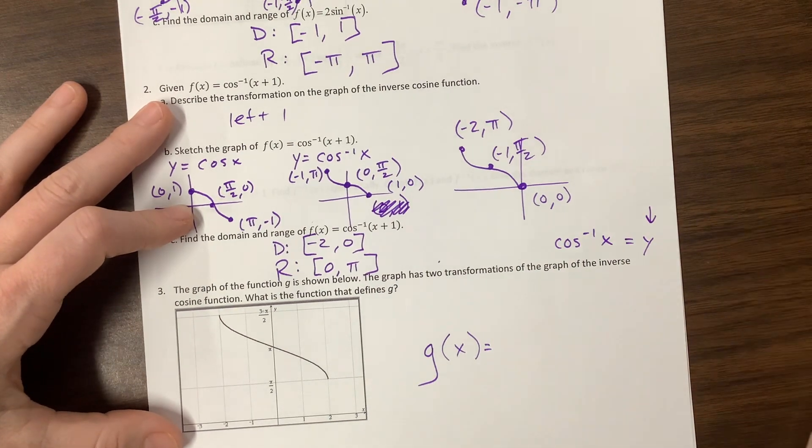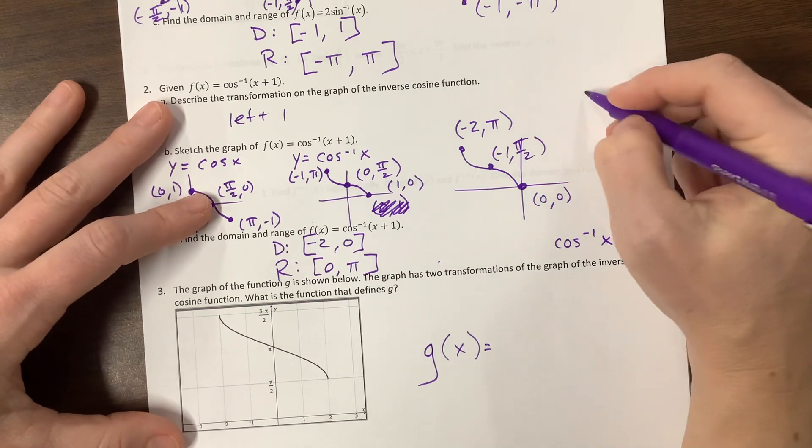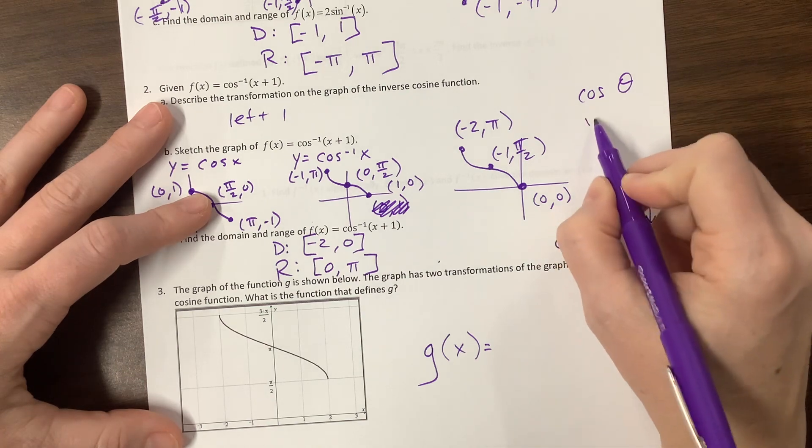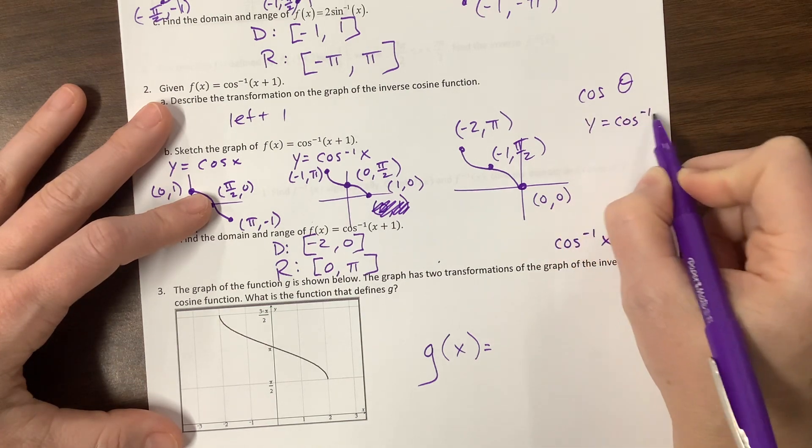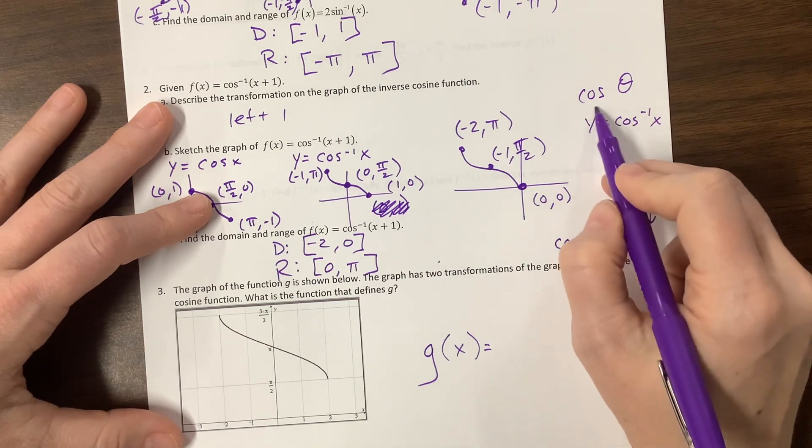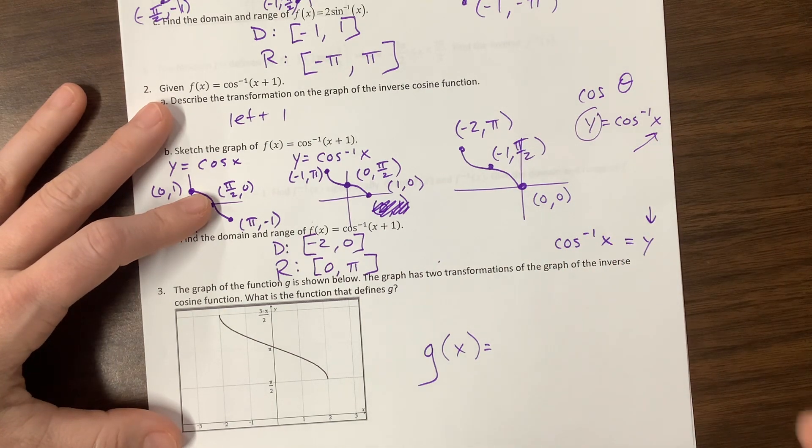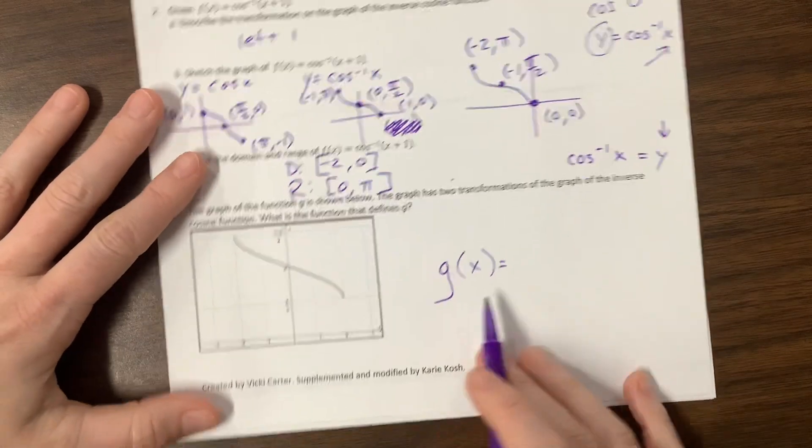So a lot of times in AP Precal, I've seen stuff like cosine of theta, which is fine, because that's cosine of an angle. But if you write y equals cosine to the negative one of x, the angle measure is actually here. So it wouldn't make sense to put theta there, in my opinion. Okay, so back to here.